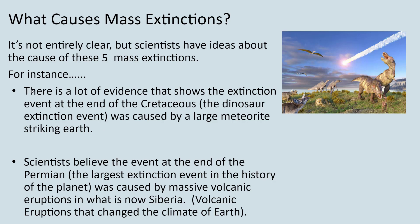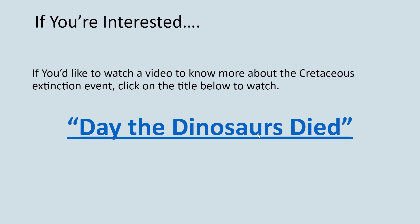For the extinction that ended the Permian, scientists aren't entirely sure, but there's growing evidence that it was caused by rapid climate change from a series of massive volcanoes in what is now Siberia. That's still a controversial theory with a lot of speculation. There's no evidence of a huge meteorite like there is for the end of the Cretaceous.